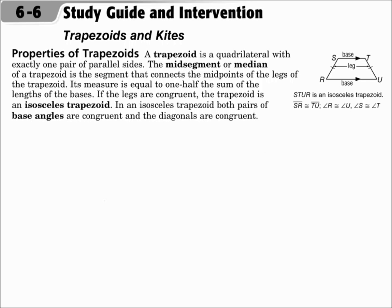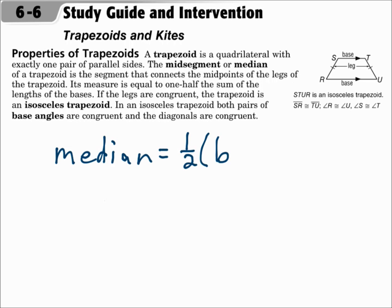If the legs are congruent, then the trapezoid is an isosceles trapezoid. In an isosceles trapezoid, both pairs of base angles are congruent, and the diagonals are congruent. With respect to the median, the formula is: median equals half of b1 plus b2 — it's half the sum of the bases.